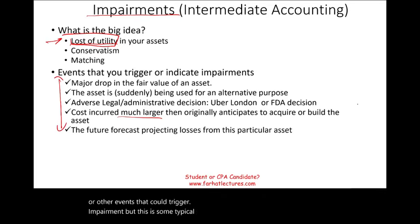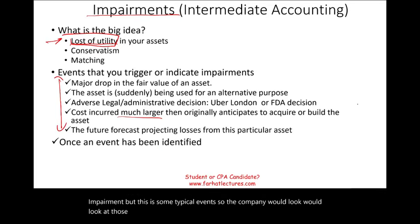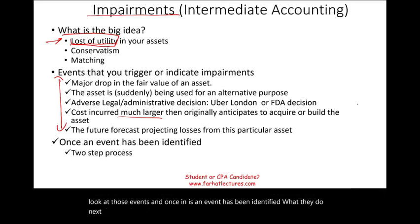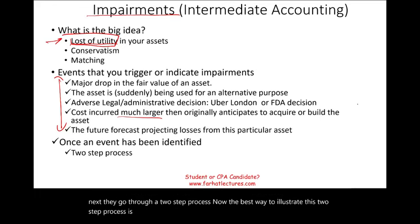The company looks at those events, and once an impairment-triggering event is identified, they go through a two-step process. The best way to illustrate this two-step process is to walk through it and then work an example.